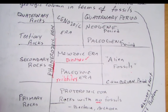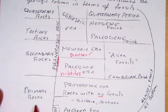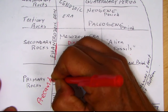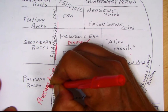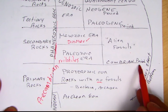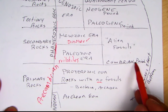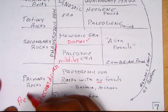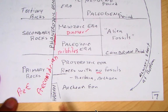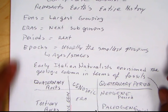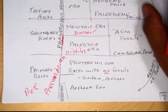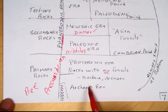Continuing on with the geologic column, we look at the primary rocks. Because they have very little to no fossils, we call these rocks down here part of the Precambrian. The reason we call them Precambrian is because they occur before the Cambrian period. We have two primary eons in this Precambrian time: an older Archean eon and a younger Proterozoic eon.